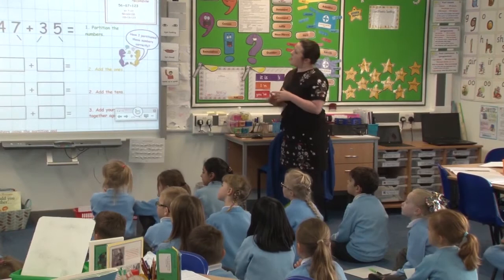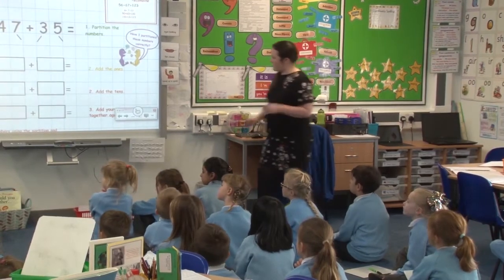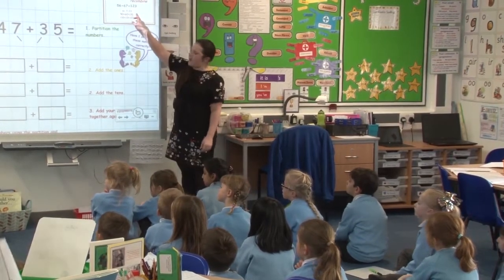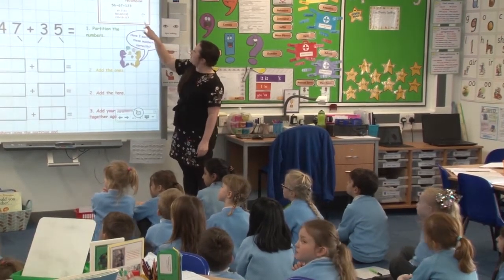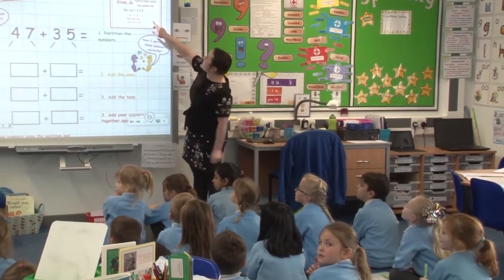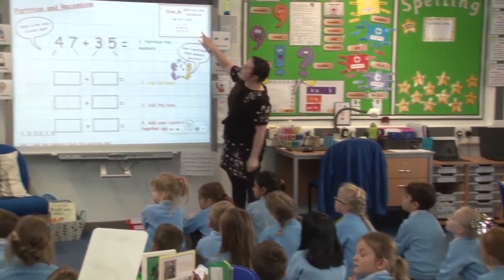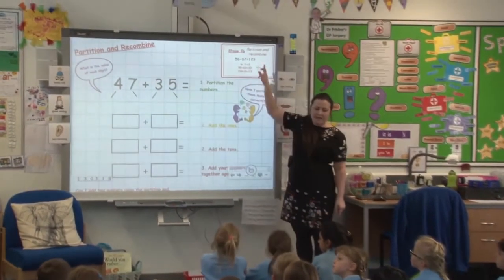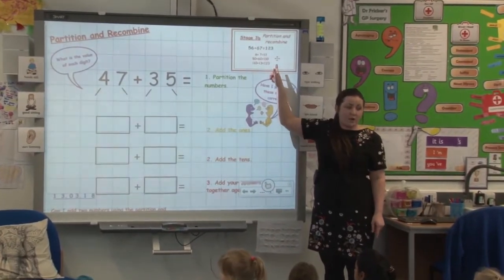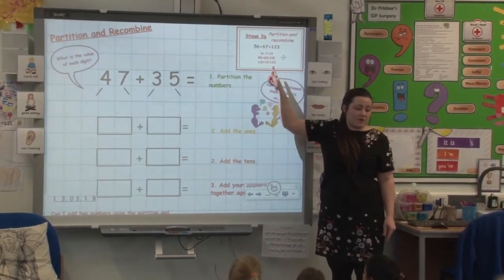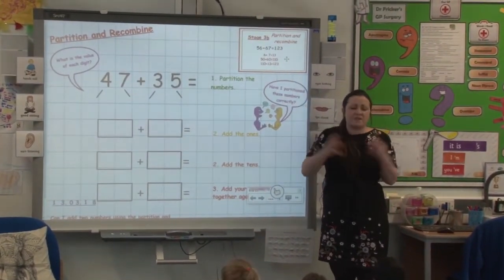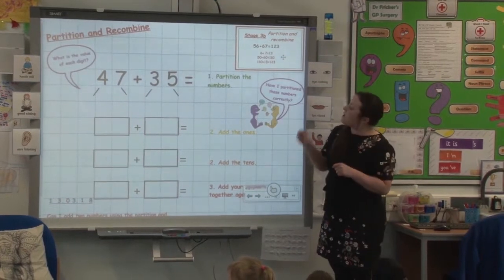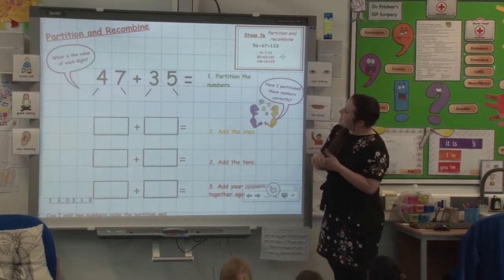So we're going to have a look at our partition and recombine. Here is our calculation — this is what we can see over there on the board, up on the wall — our Stage 3B, and that's what we're going to be moving on to. That's what we want to start using: our written methods instead of our jottings.